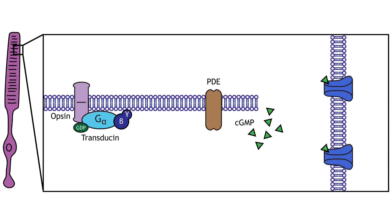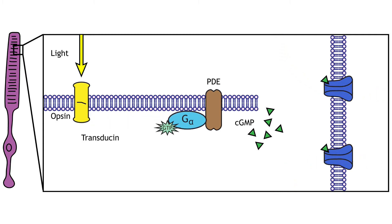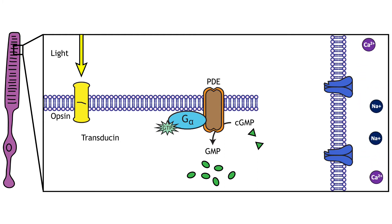When a photoreceptor moves into light, the cell hyperpolarizes. Light enters the eye, reaches the photoreceptors, and causes a conformational change in a special protein called an opsin. This change activates a G protein called transducin, which then activates a protein called phosphodiesterase. Phosphodiesterase breaks down cyclic GMP to GMP, and the cyclic GMP-gated ion channels that were open in the dark close. The decrease in cation flow into the cell causes the photoreceptor to hyperpolarize.